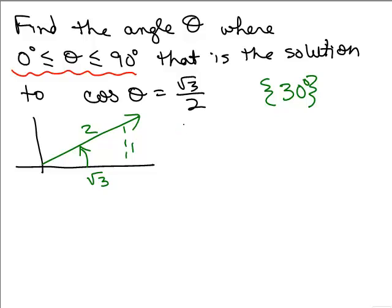Now, if I would have said the cosine was equal to negative square root of 3 over 2 and I would have restricted it between 0 and 90 degrees, there wouldn't be anything in between 0 and 90 degrees. Because, remember, the cosine is always positive in this first quadrant.